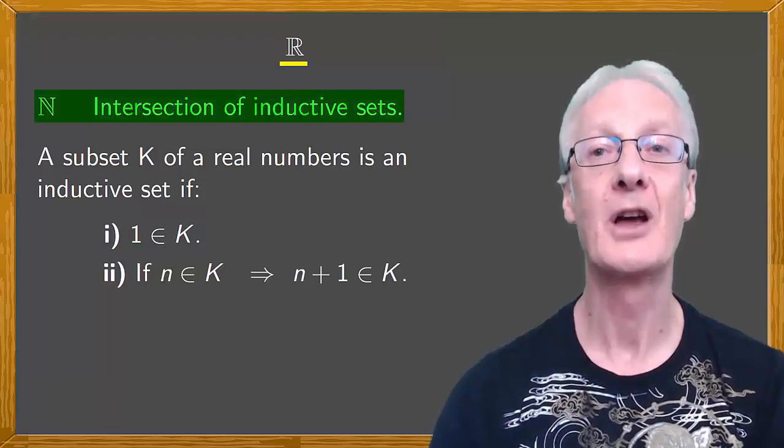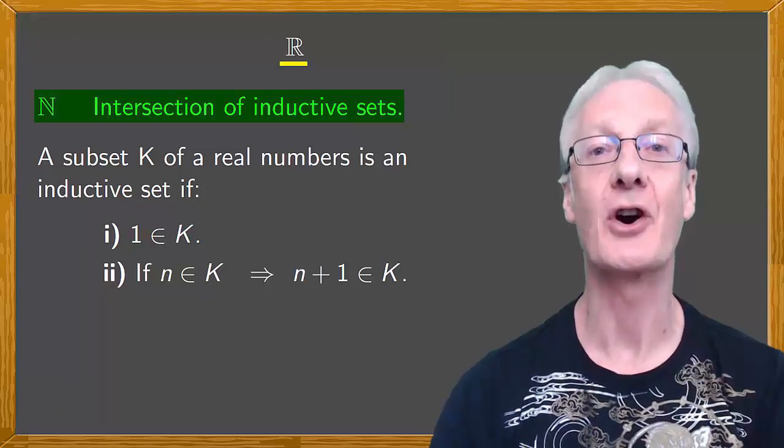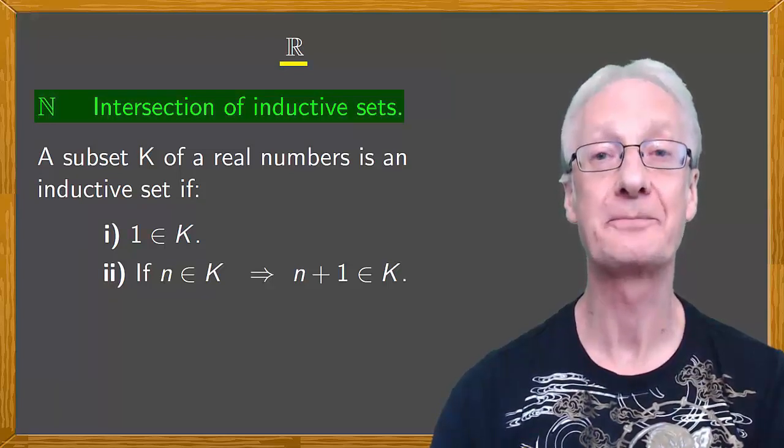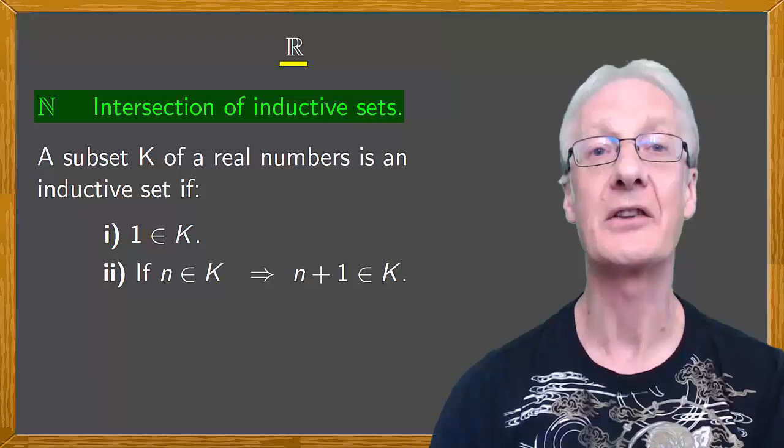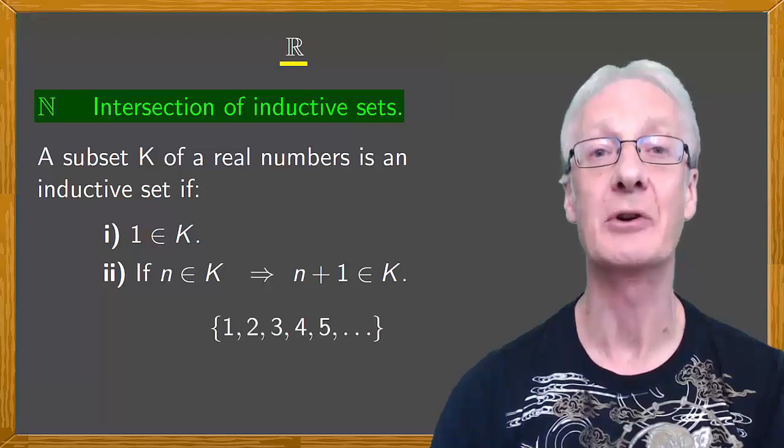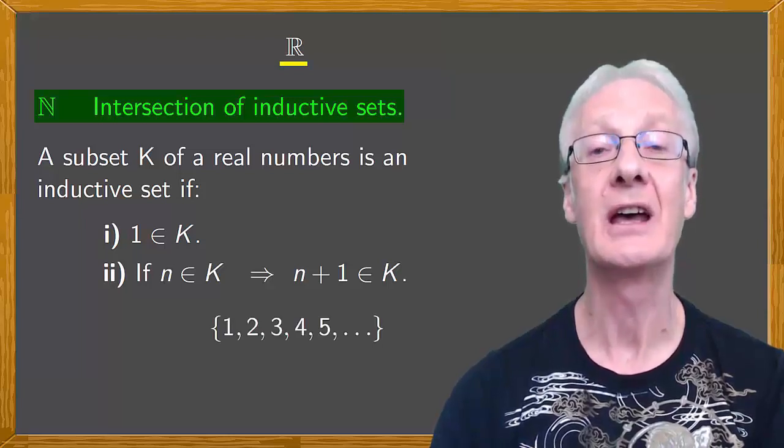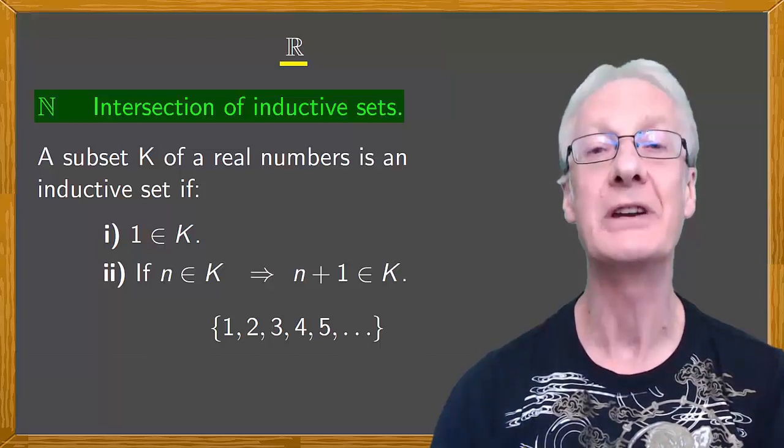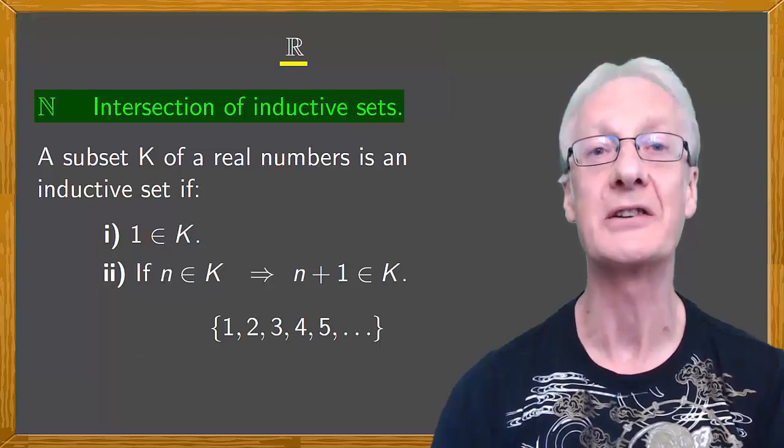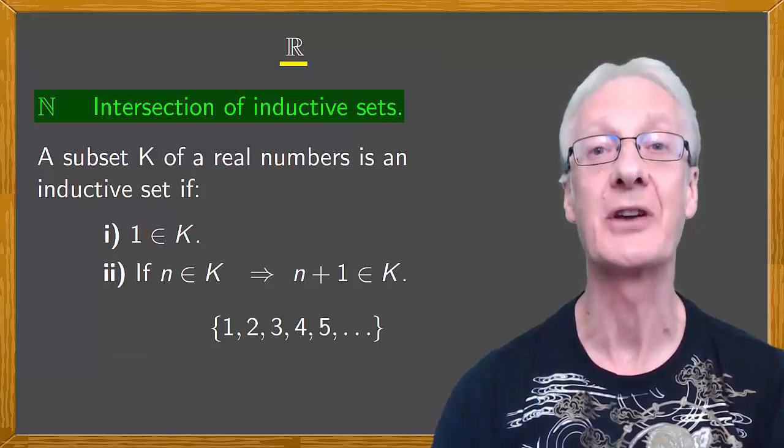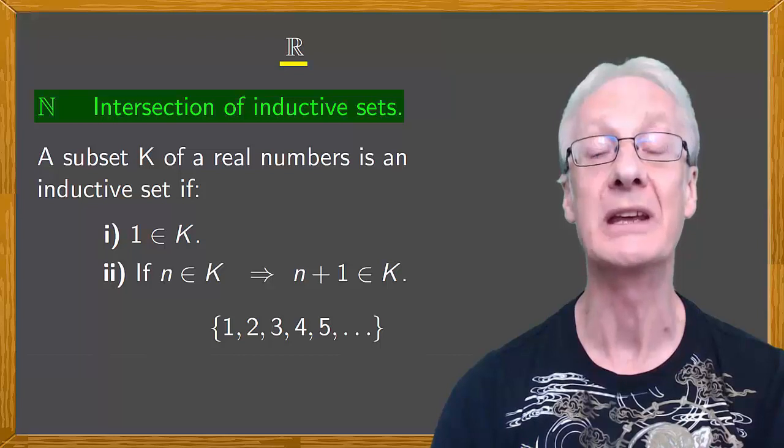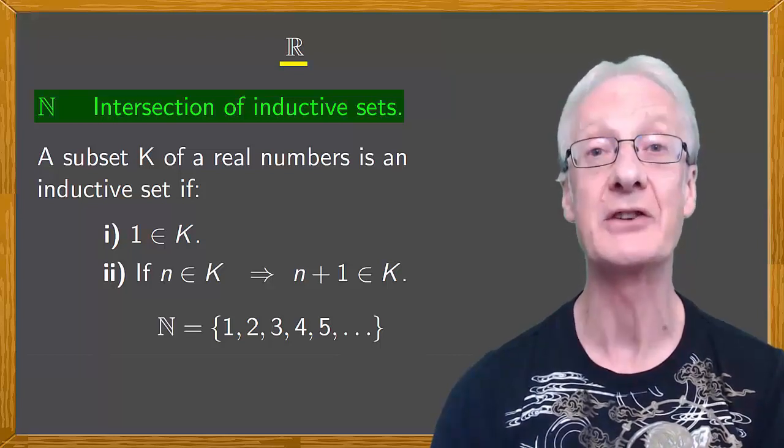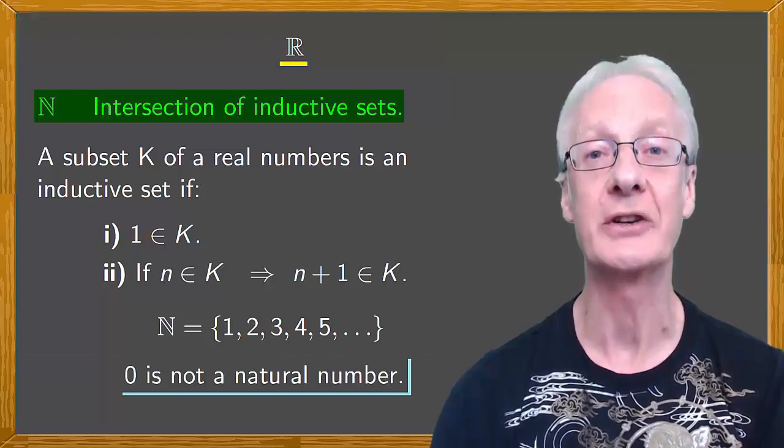So by this definition, what are the natural numbers? What is the intersection of inductive sets? It's clear that the set one, two, three and so on is an inductive set, and also that it's contained in all inductive sets. Therefore, if we define natural numbers as the intersection of all inductive sets, natural numbers would be one, two, three and so on. So by this definition, zero is not a natural number.